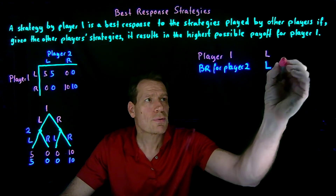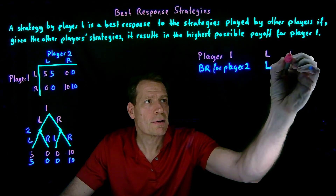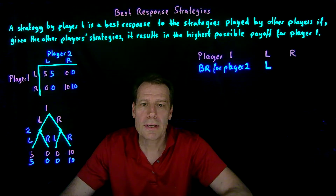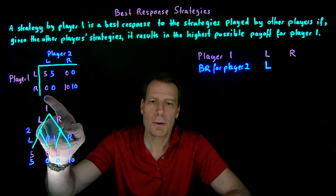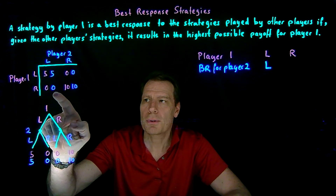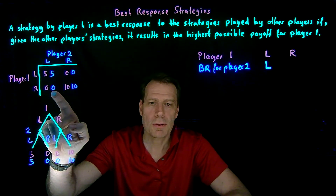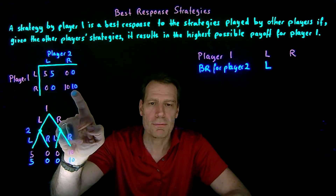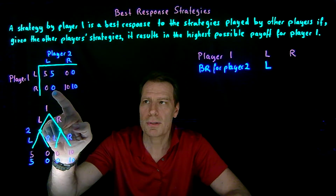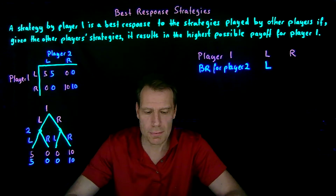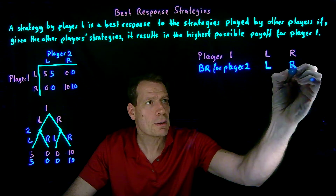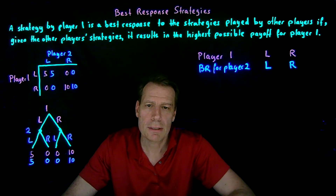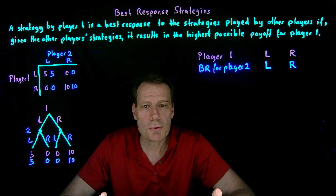What if player 1's strategy was to play right? Then player 2 would know that she's going to end up in the lower row, choosing between a payoff of 0 if she goes left and a payoff of 10 if she goes right. Since 10 is better than 0, going right is the best response. So player 2 will simply mimic what the other player is doing. And of course, the reverse is true for player 1.